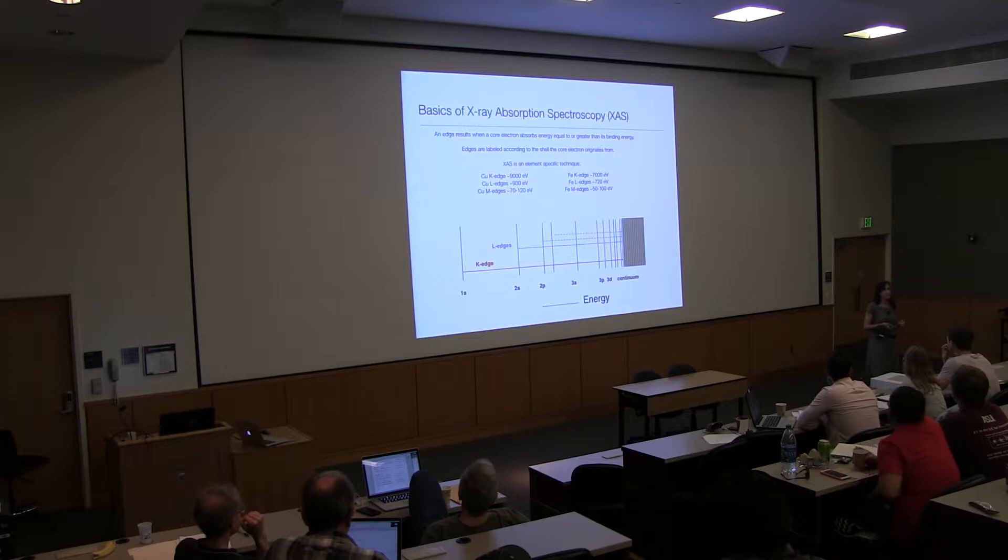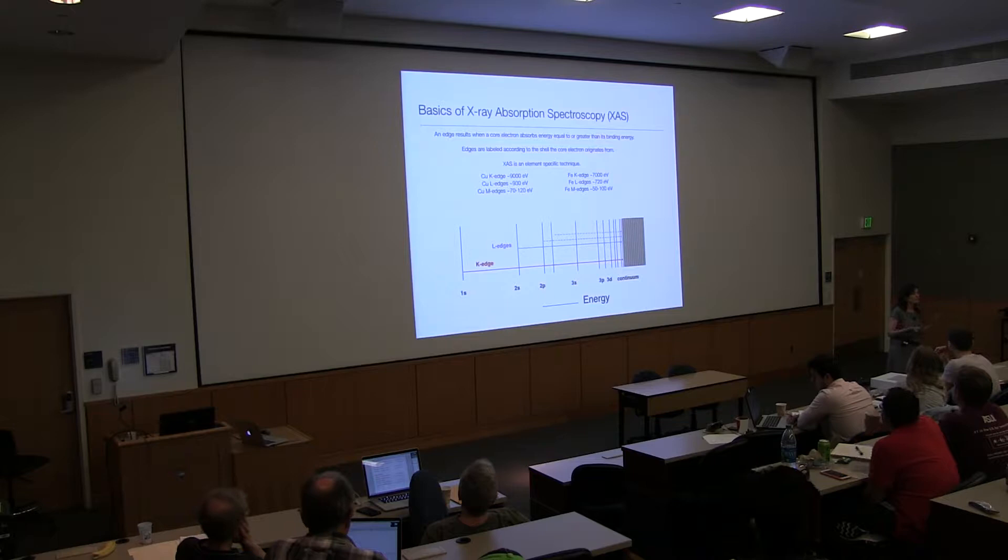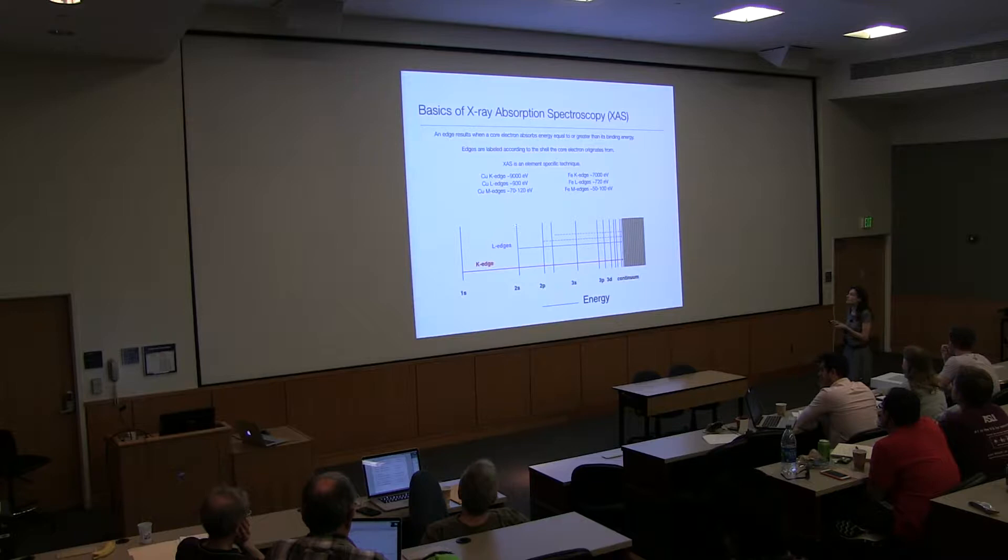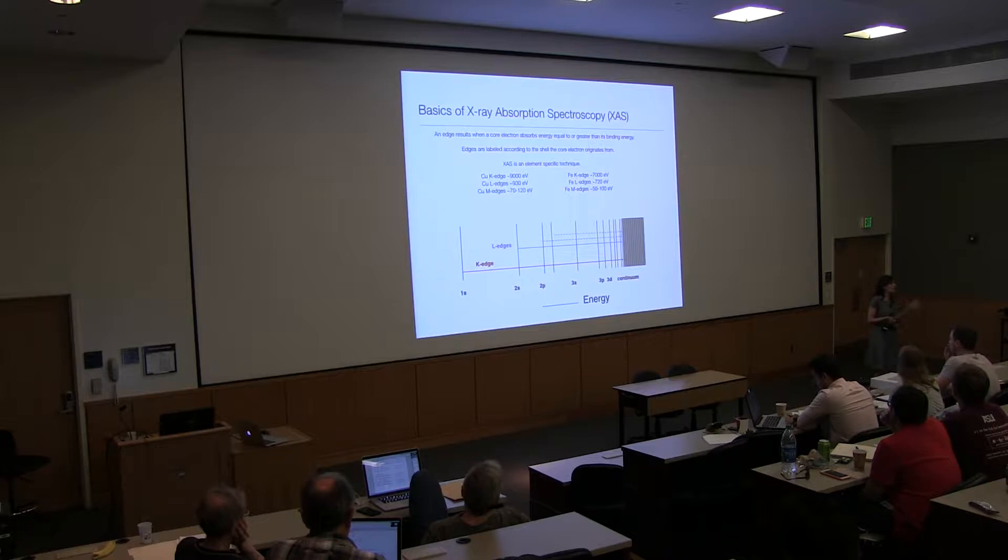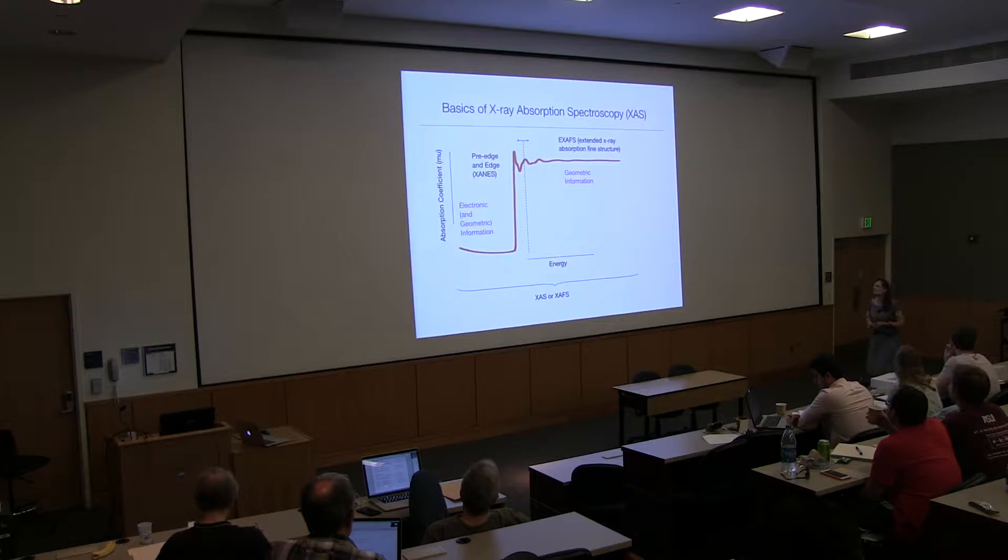So, for a copper K-edge, we're going to ionize the 1S electron, and that's going to take about 9,000 electron volts of energy. If we want to do this at iron, that takes a little over 7,000 electron volts of energy. These are huge separations, right? Remember, an electron volt is over 8,000 wave numbers. And this large separation in core ionization energies of the elements is what makes X-ray absorption selective. So, you can absolutely measure any element you'd like to measure, as long as your X-ray source has sufficient photon flux at that given energy.